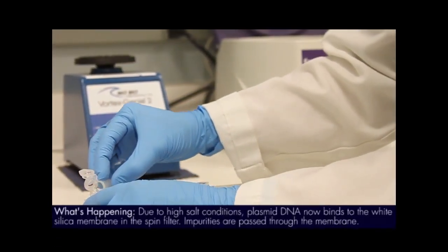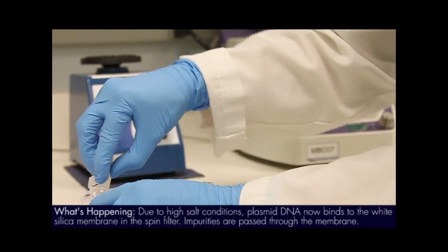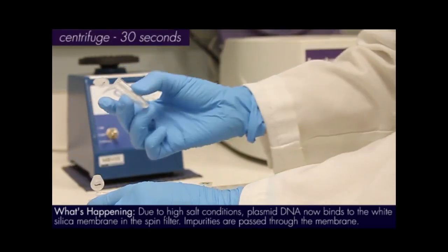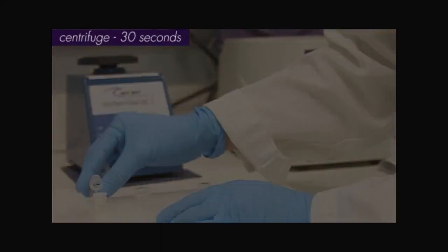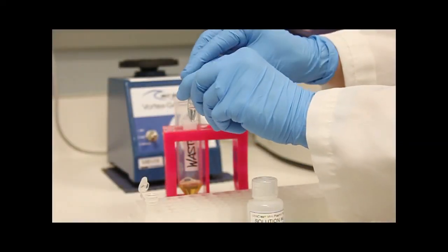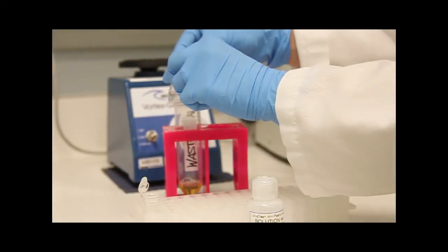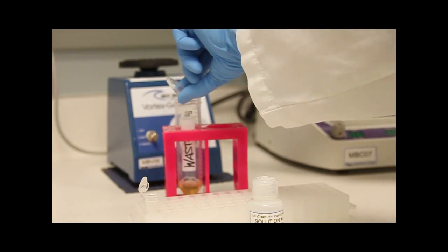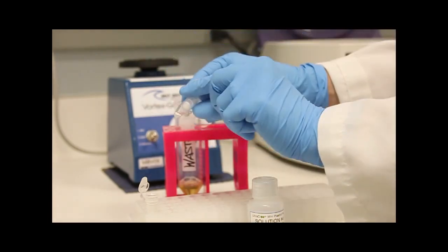Transfer all of the clear liquid supernatant to a spin filter, avoiding the white precipitate. Centrifuge the spin filters for 30 seconds at 10,000 times G. Remove the filter basket from the collection tube, discard the flow through, and replace the filter basket in the collection tube.